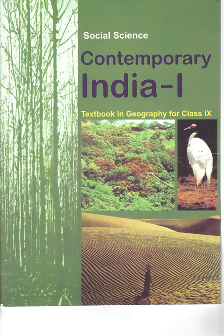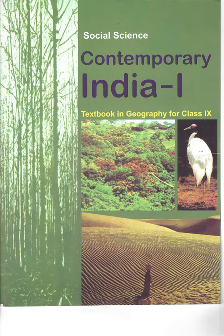The western part of the northern plain is referred to as the Punjab Plains, formed by the Indus and its tributaries. The larger part of this plain lies in Pakistan. The Indus and its tributaries — the Jhelum, the Chenab, the Ravi, the Beas and the Satluj — originate in the Himalaya. The section of the plain is dominated by the Doabs. The Ganga plain extends between Ghaggar and Tista rivers. It is spread over the states of North India: Haryana, Delhi, UP, Bihar, Jharkhand and West Bengal. Particularly in Assam lies the Brahmaputra Plain.